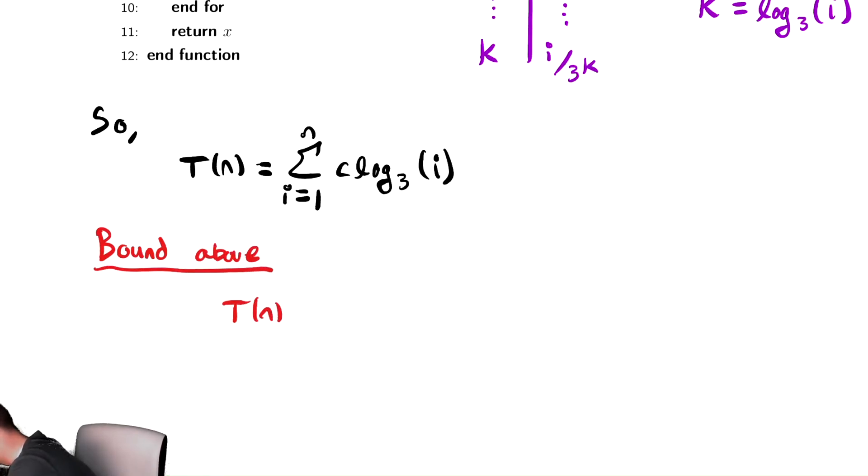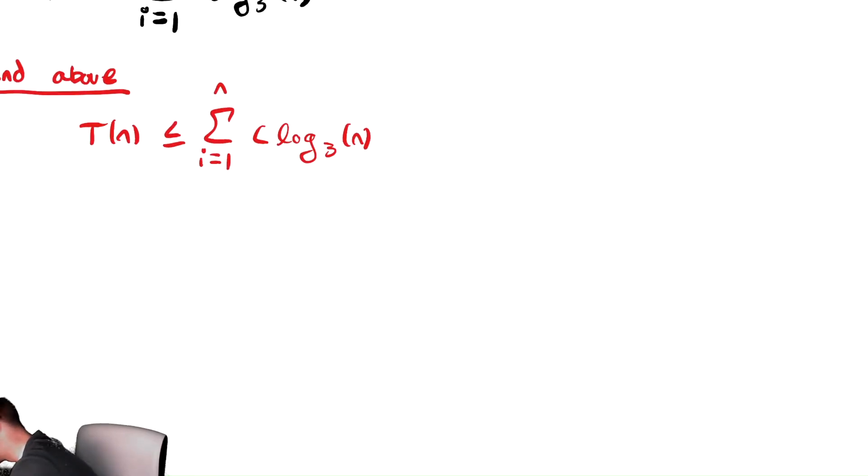We need it above. We're going to take the summation and replace each term with the maximum that occurs. So we replace log base 3 of i with log base 3 of n. We've now eliminated i from the summation. So we can then simplify it. And we write this as n times C log base 3 of n. In this first step, we are replacing each term with the max. In that next step, we are simplifying the sum.